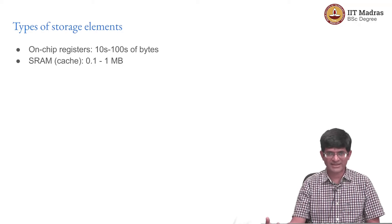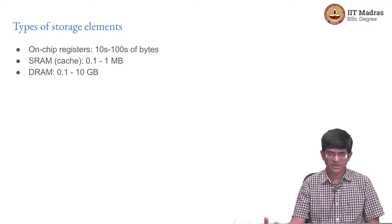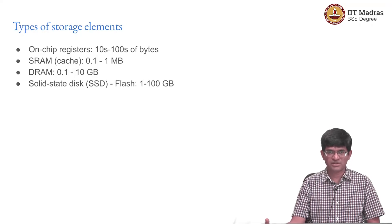So, you have registers, you have SRAM cache, and then you have the main DRAM — the dynamic RAM — in the computer. This is what is typically referred to when you talk about the RAM of your PC. Let us say you have a laptop with 4 GB of RAM; this is it — the DRAM. You would like it to be as large as possible. Typical amounts these days are between 4 to maybe 16 GB or so. There are of course servers with much more than that, but that is really fairly high-end servers.